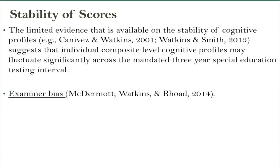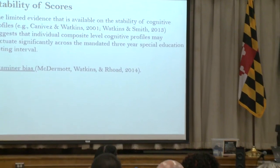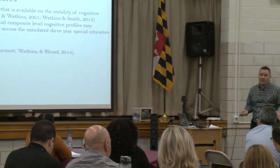We've also got issues with stability of scores. Turns out that examiners account for a lot of variance. If you assess a kid at time one and take on the assessment three years later, 25% of the variance in change in scores is just due to the examiner. Think about the implications for PSW models where different people are testing kids across testing intervals. This was an ingenious study, but unfortunately we haven't had access to the data to replicate it.